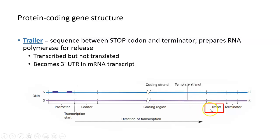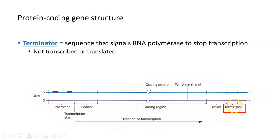The trailer becomes what we refer to as the three prime UTR, or the three prime untranslated region, in an mRNA. Finally, the terminator — downstream of the coding region — is the sequence in the DNA that signals RNA polymerase that it's time to stop transcribing, time to stop making this RNA. It allows the enzyme to dissociate or be removed from the DNA.